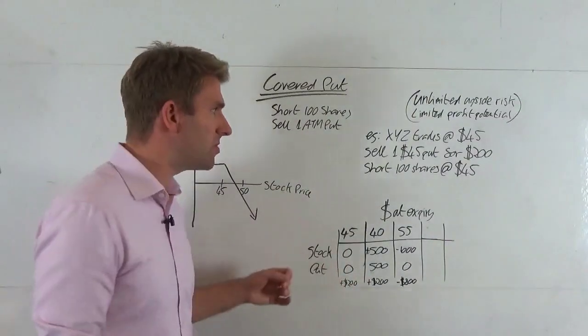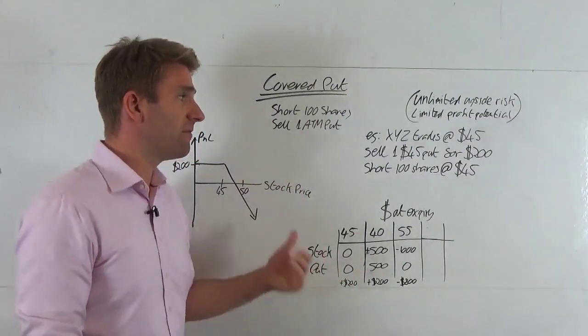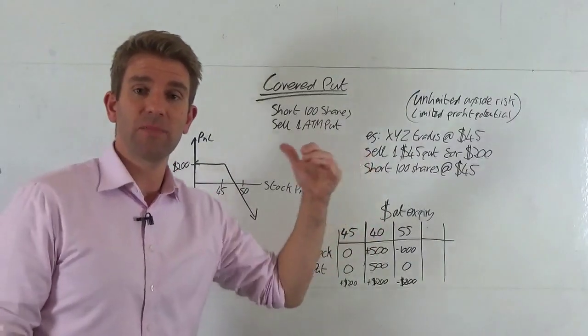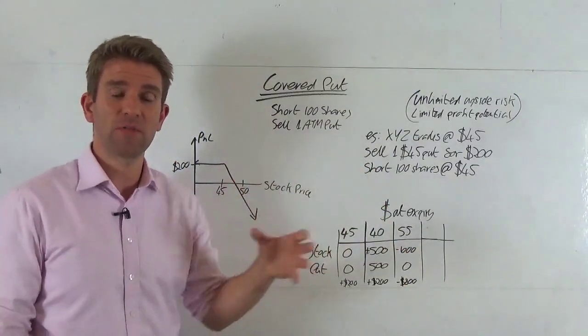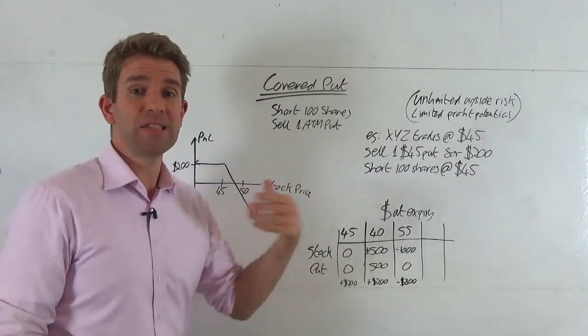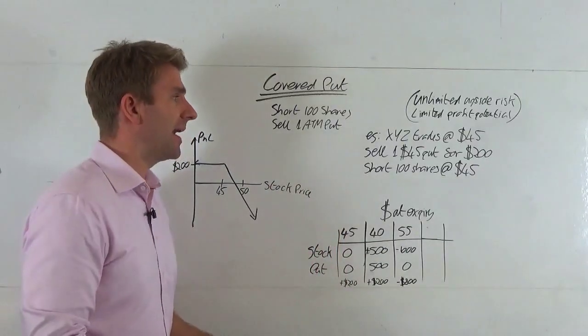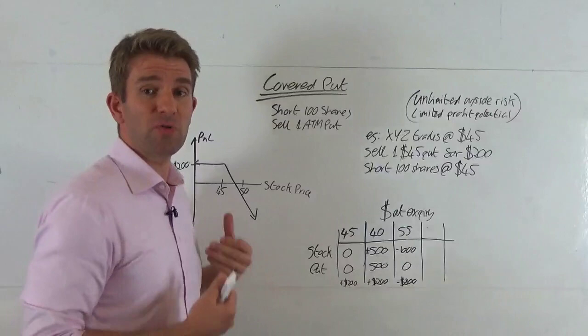But however, we've got the put here now, and the put is going to have some value. It's going to have $5 worth of value because the right to sell something at $45 when it's at $40 is $5 worth of intrinsic value. The buyer is definitely going to exercise that and he's going to claim his $500, but he paid you $200 for the contract anyway.